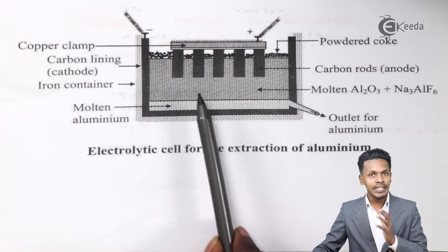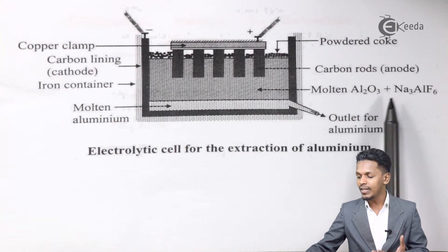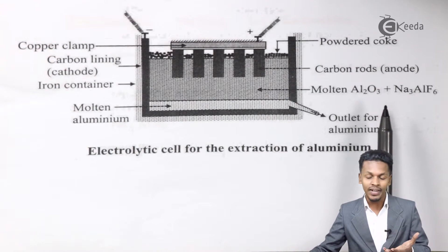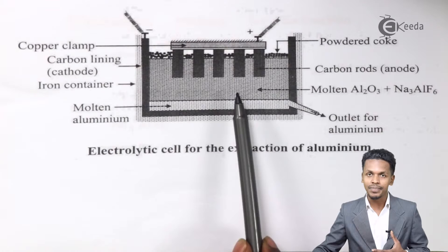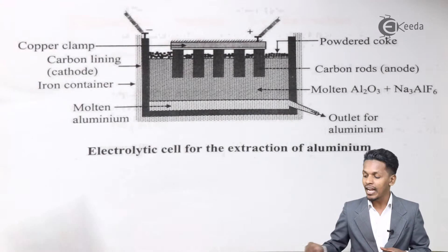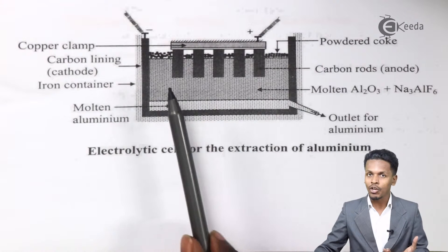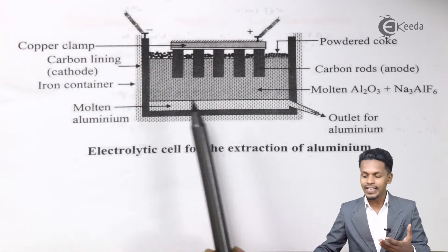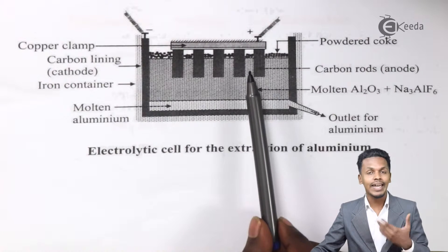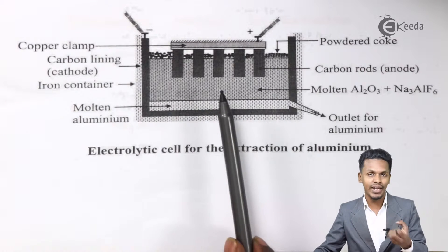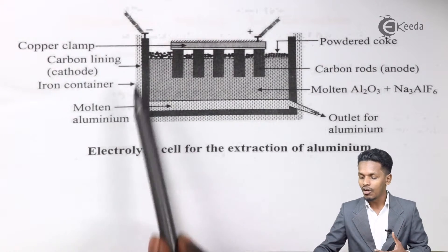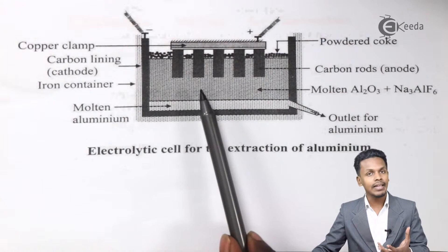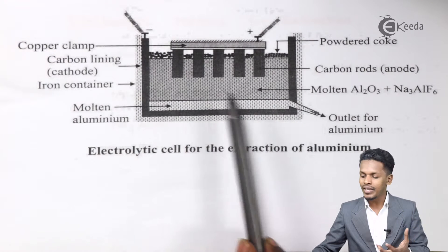The electrolyte or the solution present here is basically molten Al2O3 and Na3AlF6, along with other reagents such as fluorspar. These are all present in this solution, making it act like an electrolyte. From this we can easily extract the aluminum. The aluminum will be deposited on the cathode because at the cathode reduction takes place and at the anode oxidation takes place. So all the aluminum extracted electrolytically will be deposited on the cathode as molten aluminum, while the remaining impurities stay in the solution.